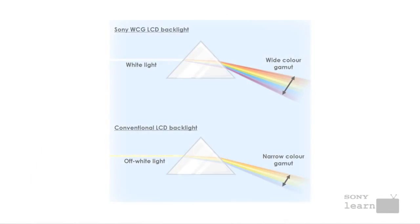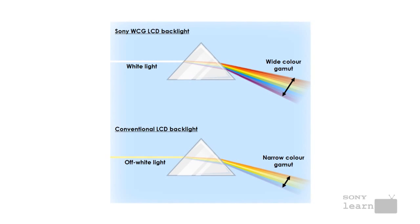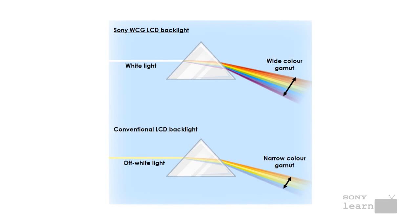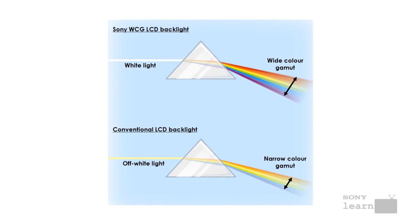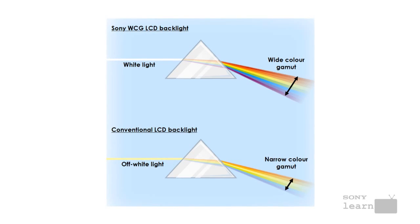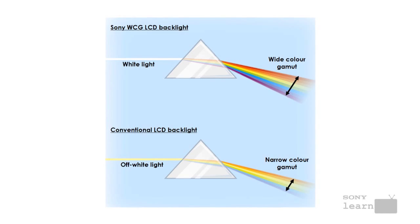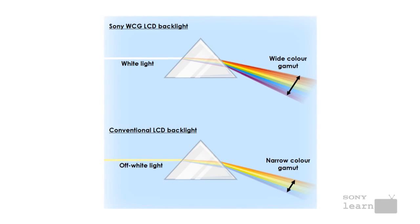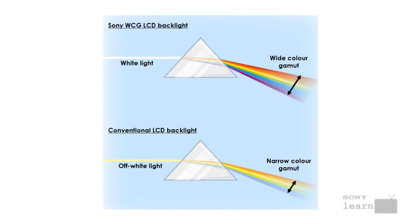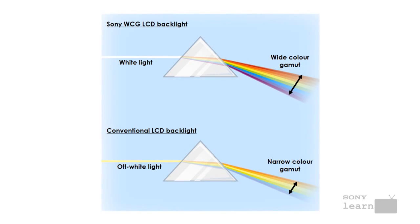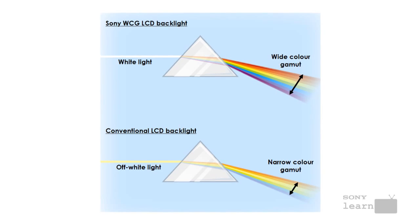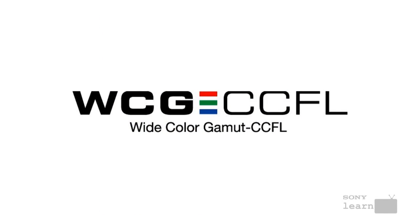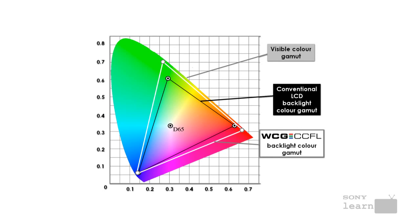The first limitation is colour accuracy. The intention with a backlight is to create as white an output as possible. The whiter the output, the broader the range of colours you're going to be able to produce, because white light actually contains all of the colours. If you shine a pure white light through a red coloured filter, you're going to get a purer red. CCFL backlights are a little bit limited in terms of their colour range because they're not pure white. Sony has developed a special coating on the fluorescent tubes which produces a purer white light output, and many Sony TVs offer a wider colour gamut as a result.